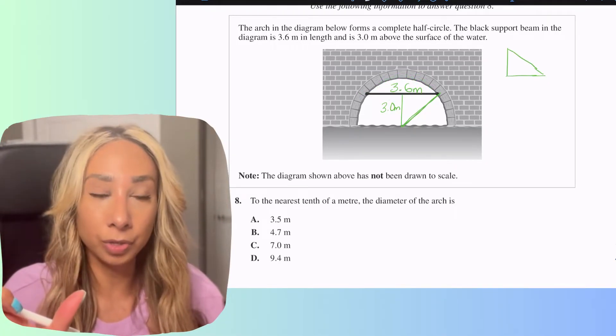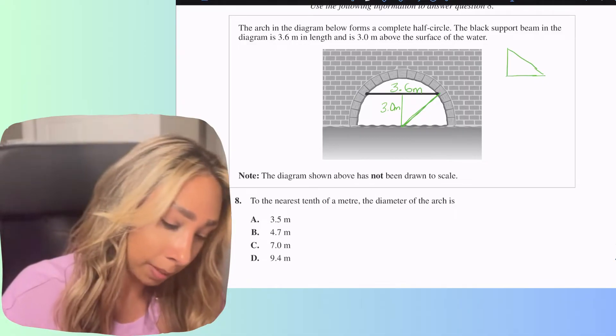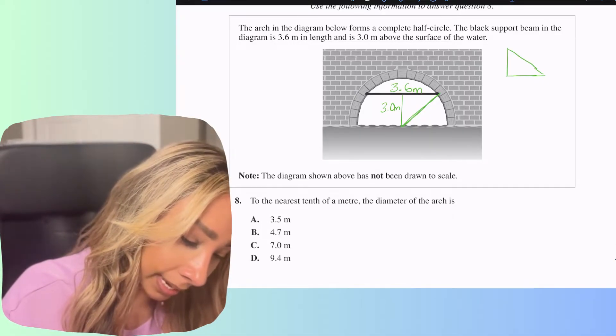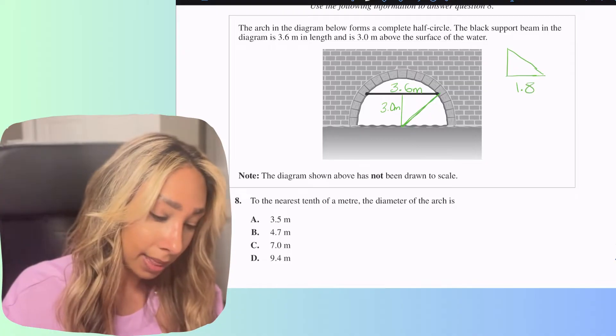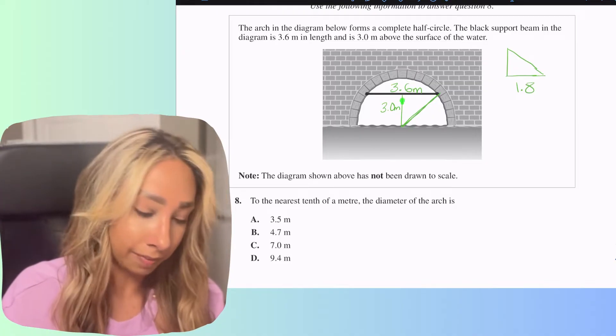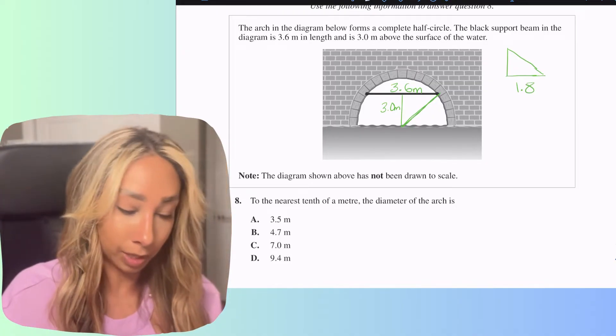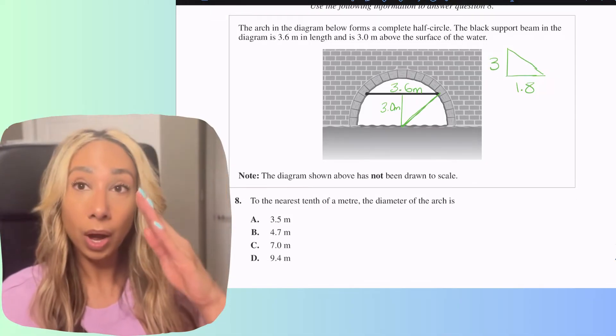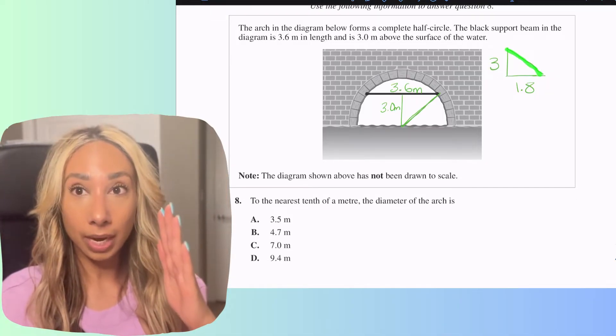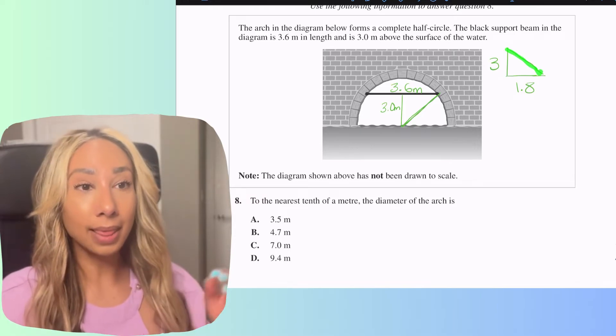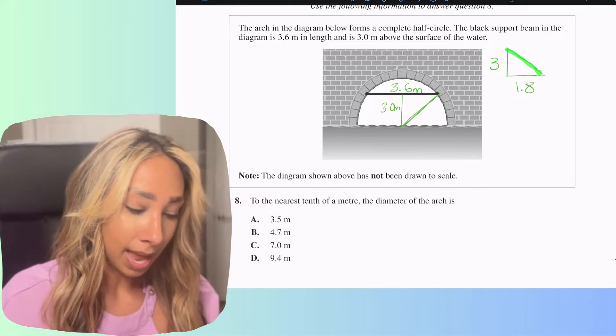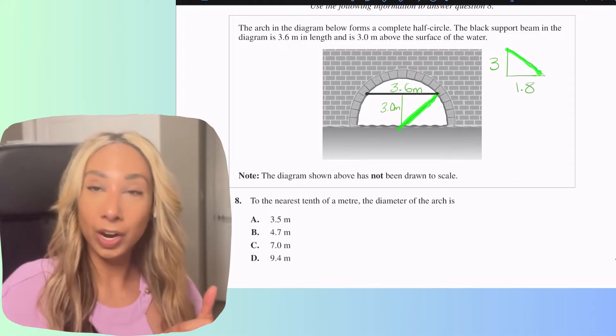The bottom portion of this is going to be 3.6 divided by 2, right, because the whole beam is 3.6 but we only need half of it to figure out that bottom part of the triangle. So that is only going to be 1.8 and then the height of the triangle they gave us that value, that's going to be 3 meters. Now our job is to figure out the hypotenuse, so the longest side of the triangle, because that's going to become my radius and once I double that I can figure out my diameter.